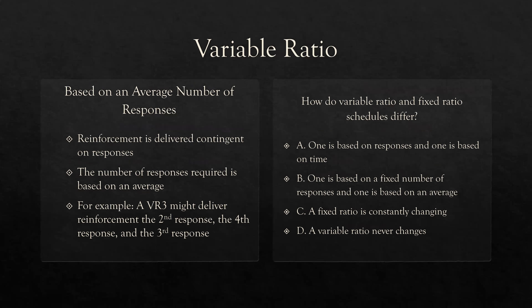Variable ratio — also known as the slot machine effect. Think about a slot machine: you can pull the handle a hundred times and never know how many times you're going to win. Sometimes zero, sometimes a hundred, and anywhere in between. Variable ratios work just like fixed ratios, except the response requirement is an average. For example, a variable ratio of 3: you might deliver reinforcement on the second response, then the fourth, then the third.